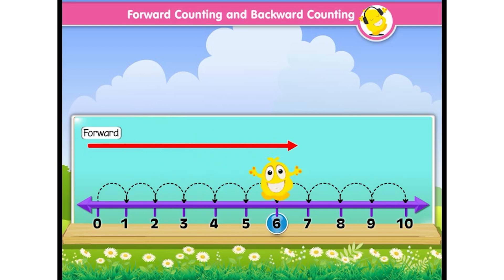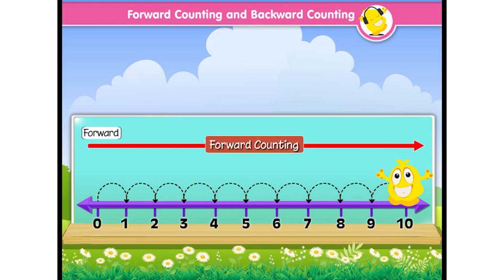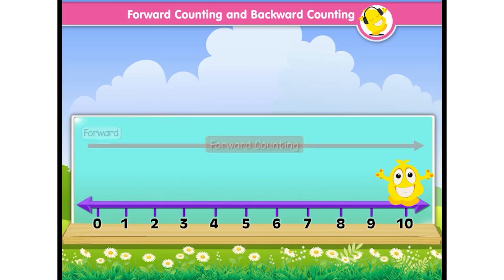Six, seven, eight, nine, ten. So jumping forward on a number line is forward counting.